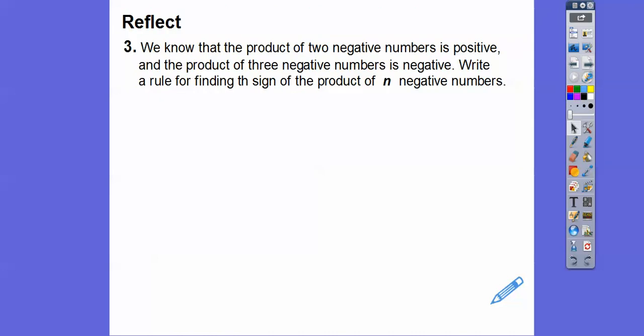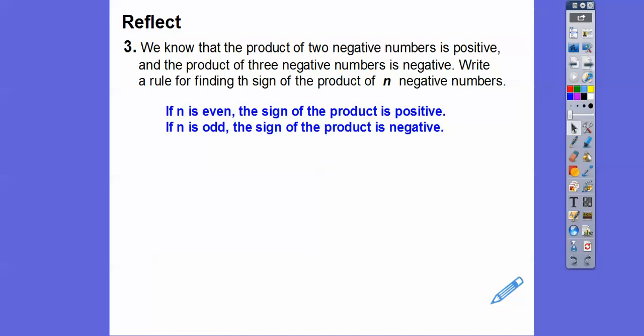The product of two negative numbers is positive, and we found the product of three negative numbers is negative. The rule: if n is even, the product is positive; if n is odd, the product is negative. So three negatives gives a negative answer, five negatives gives a negative, and six negatives gives a positive.